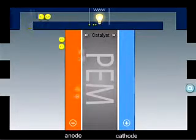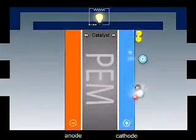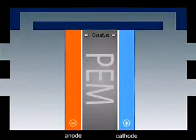On the oxygen side of the membrane, the protons and the electrons react with oxygen from the air, in the presence of a second catalyst layer, generating water and heat.